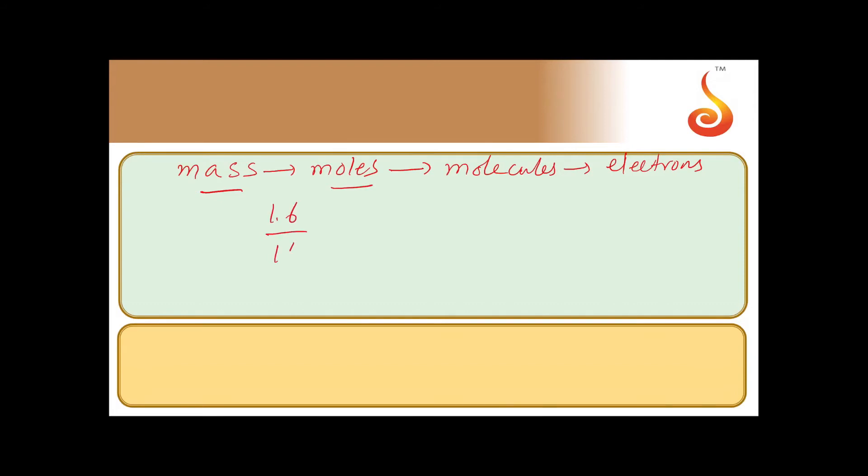Divide by molar mass: 1.6 by molar mass 16. Molecules means multiply by Avogadro's number N_A. If you take CH₄ molecule, each molecule contains 10 electrons because carbon has 6 plus 4 hydrogen atoms, so multiply by 10.